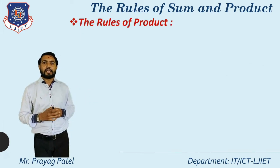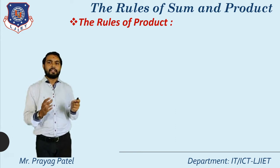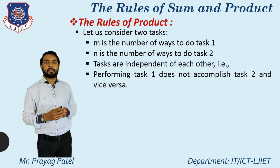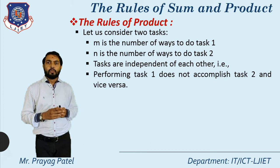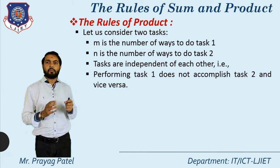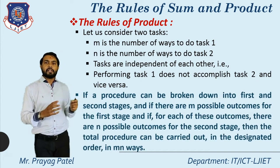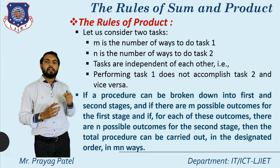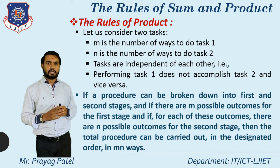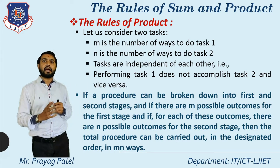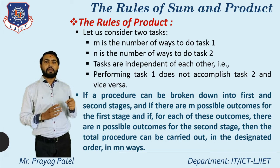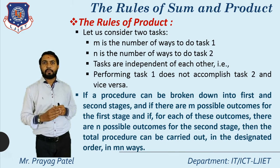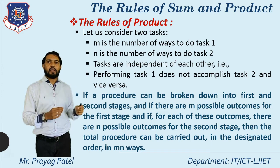Next is the rule of product. For the sum rule we already know that addition m plus n applies. For the product rule, similarly, m is the number of ways to do task one and n is the number of ways to do task two, and all tasks are independent of each other. The definition: if a procedure can be broken down into first and second stages, with m possible outcomes for the first stage and n possible outcomes for the second stage, then the total number of ways to carry out the procedure is m multiplied by n.